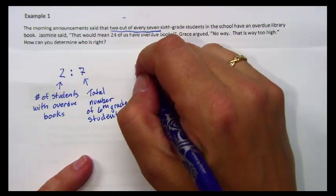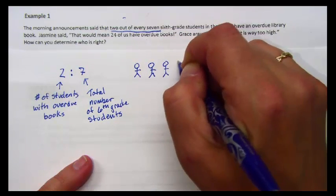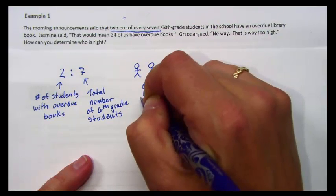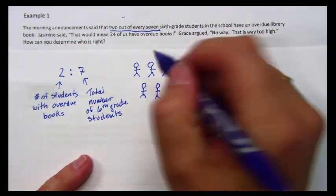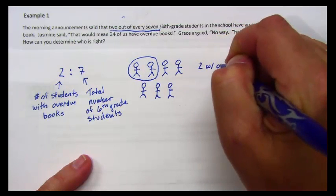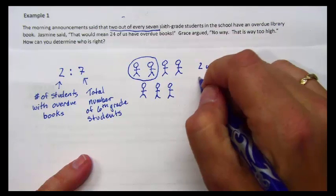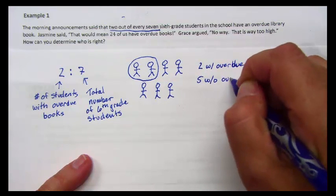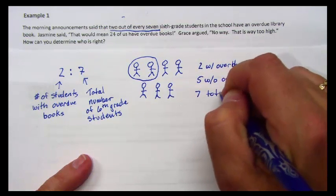It would look like this if we drew a picture. Here are seven sixth grade students. Of this group of seven students, two have overdue library books. Five do not have overdue library books. So two with overdue books, five without overdue books, and seven total students.